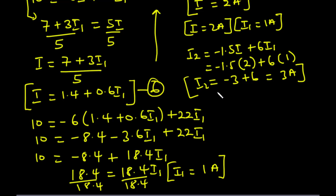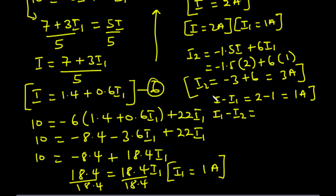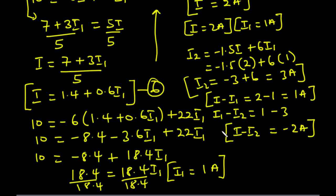Finding the remaining currents: i minus i1 equals 2 minus 1, which is 1 ampere. And i1 minus i2 equals 1 minus 3, which is negative 2 amperes. These are the values of current flowing through all parts of the circuit.